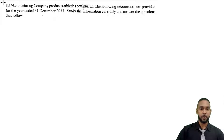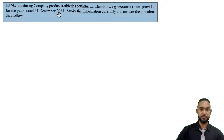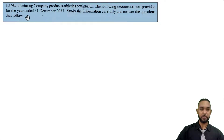If you are familiar with both of those topics and you're raring to go, let's get into it. The question reads as follows: JB Manufacturing Company produces athletics equipment. The following information was provided for the year ended 31st December 2013. Study the information carefully and answer the questions that follow.